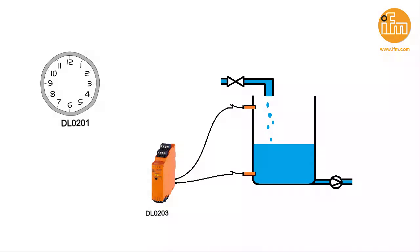The DL0201 evaluation unit is actually a timer. As an alternative, a typical two-point control can be used. The evaluation unit switches until the second sensor provides a switch-off signal.